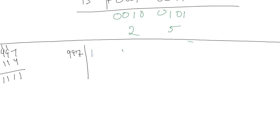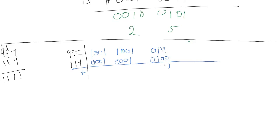So we write 997 in BCD. Then we write 114 in BCD: 0001 for the 1, 0001 for the 1, and 0100 for the 4. We add these together and we end up with groups reading 1101, 1010, and 1011. Unlike the last example where we could just read the groups directly, we can't just combine these numbers — 10, 10, 11 — because that isn't the answer.